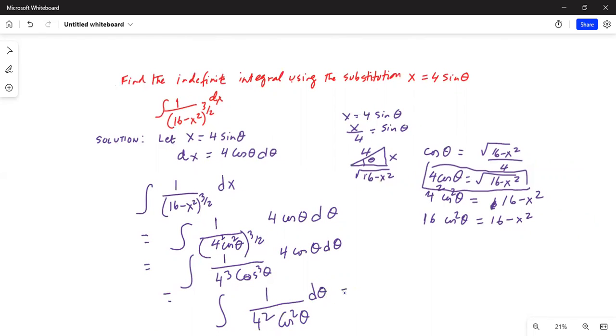Which can be further reduced to 1 over 16 times the integration of 1 over cosine squared theta d theta.